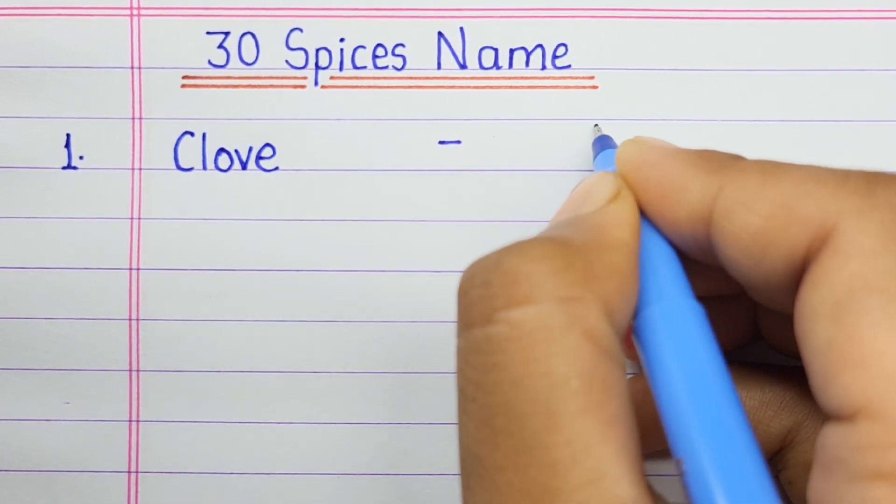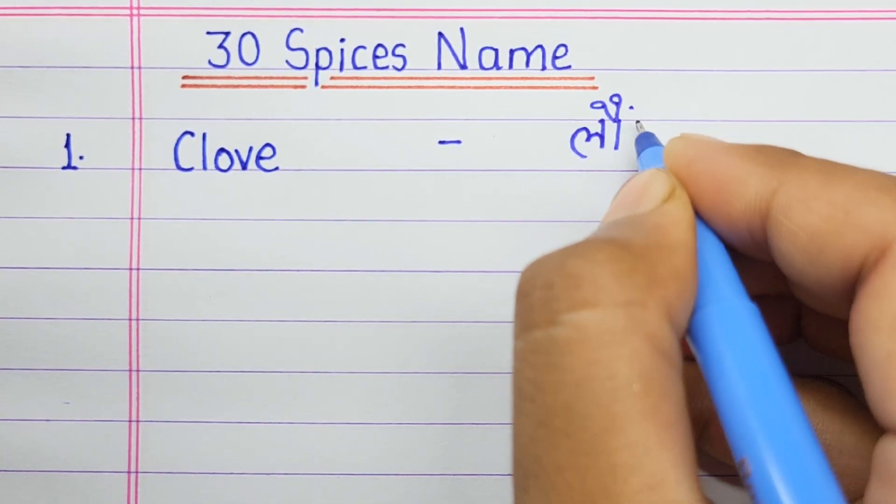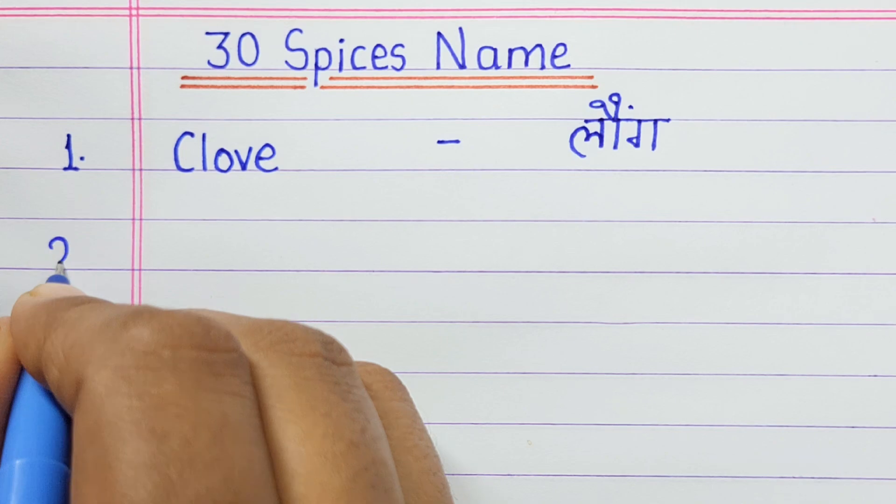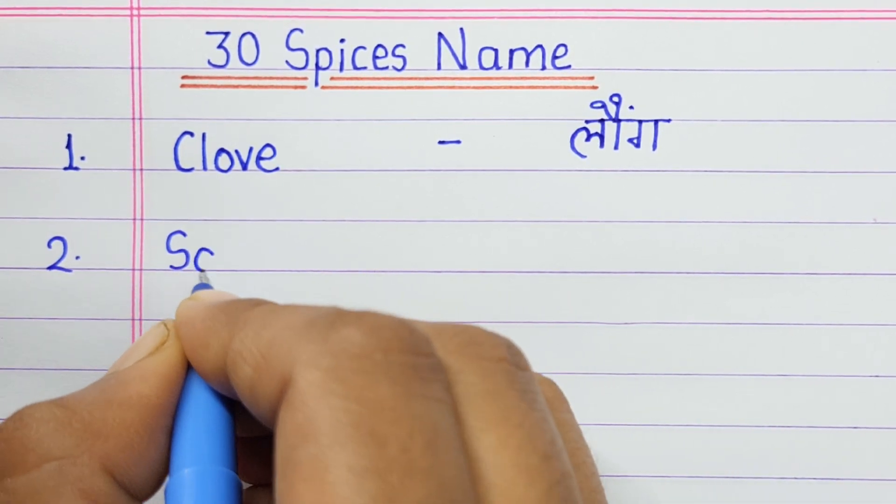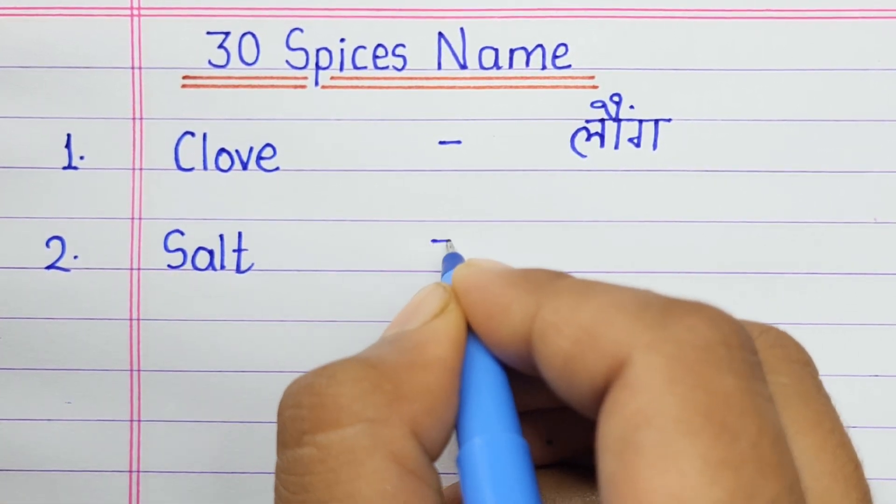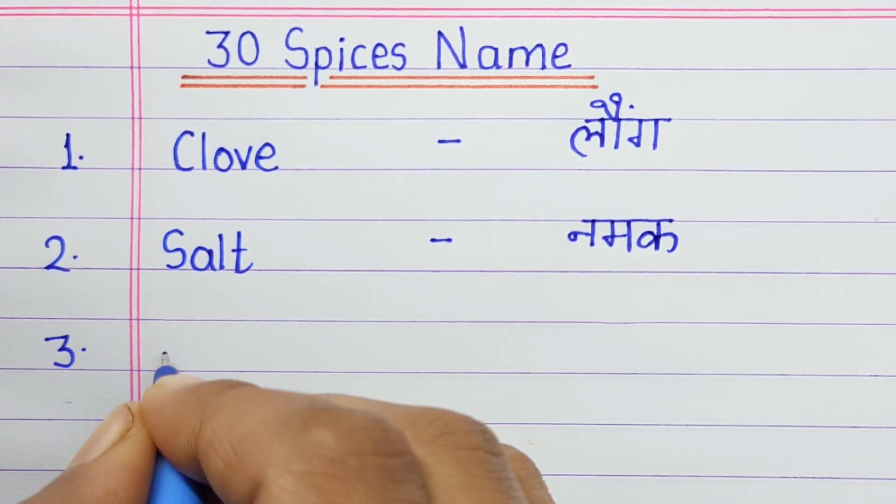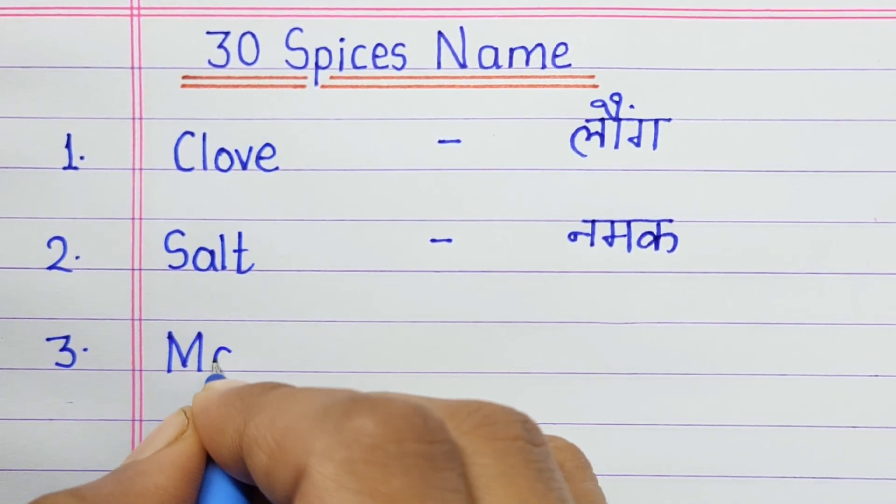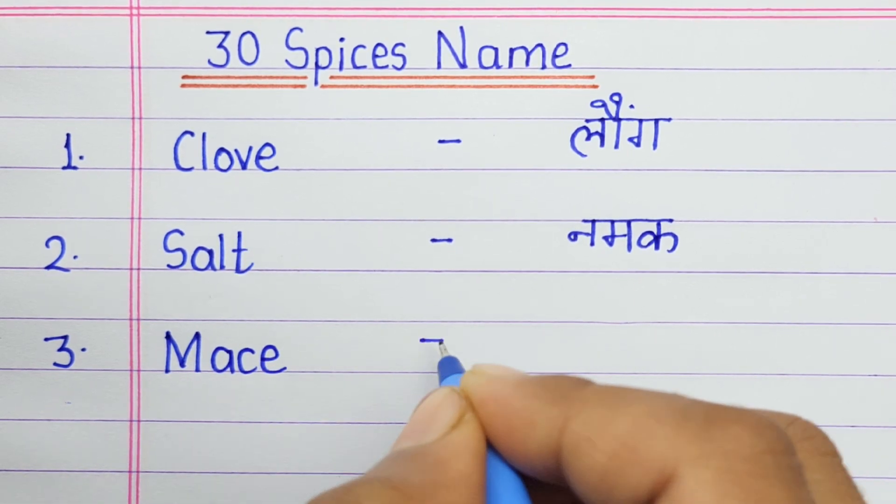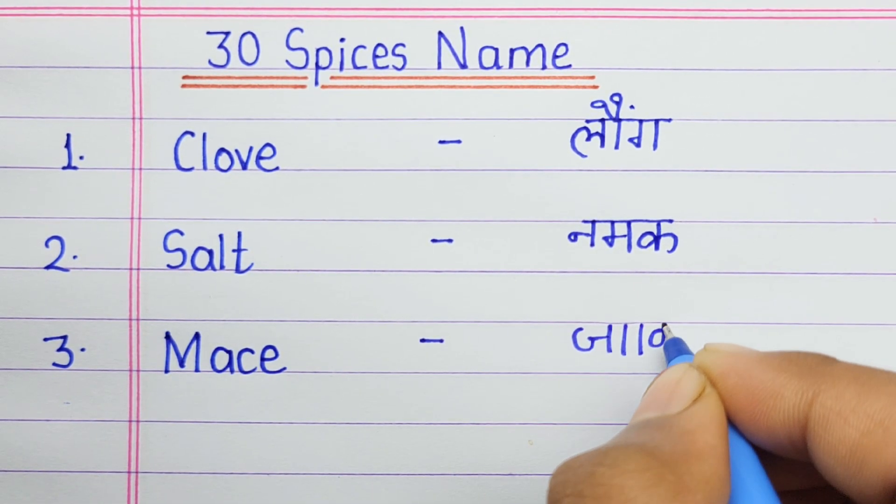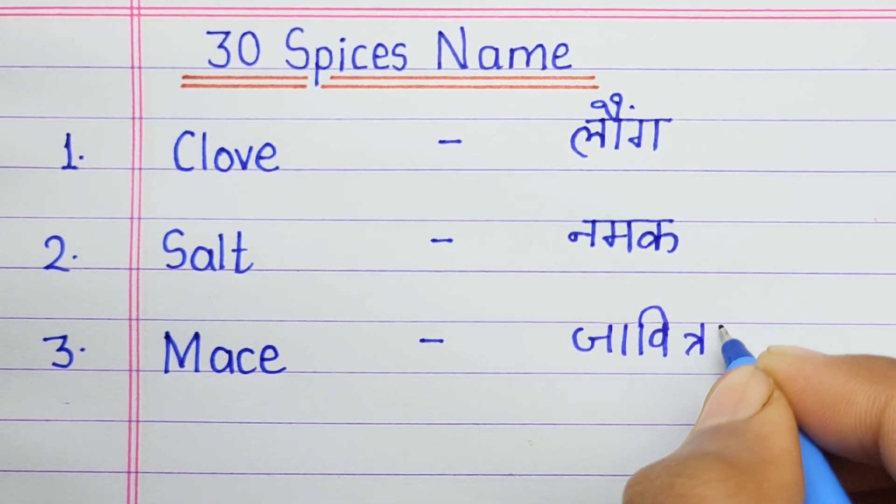Number one: Clove means long. Number two: Salt means namak. Number three: Mace means javitri.